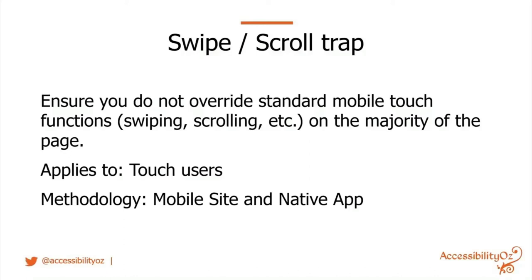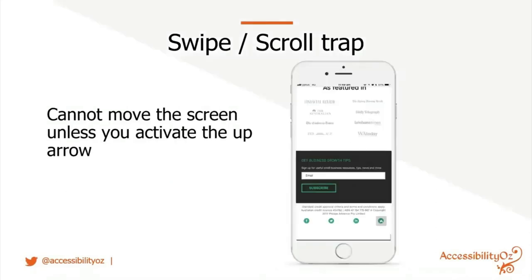The swipe or scroll trap: ensure you do not override standard mobile touch functions such as swiping and scrolling on the majority of the page. This applies to touch users on both mobile sites and native apps. In one example, if you scroll to the bottom of a page you can't scroll back up — the only option is a small arrow in the bottom-right corner that returns you to the top.